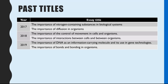Here are the titles that have come up on this new specification. You are given a choice of two titles each year. In 2017 we had one on nitrogen-containing substances and diffusion. In 2018, the control of movement in cells but also in the entire organism, and the importance of interactions between cells but also between different organisms.